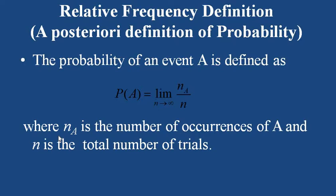The probability by relative frequency is defined by considering a random experiment which is repeated a large number of times, say n times, under identical conditions. If an event A is observed to occur nA times, then the probability of event A is defined as the limit of the relative frequency nA by n as n tends to infinity. Symbolically, P(A) = limit as n tends to infinity of nA by n. This definition assumes that as n increases indefinitely, the ratio nA by n tends to become stable at the numerical value P(A).